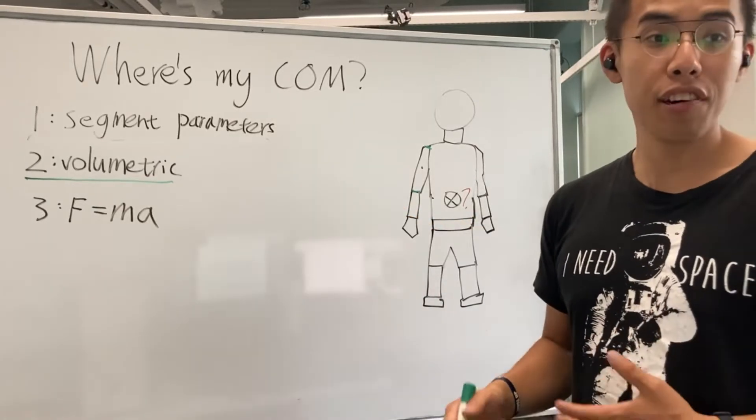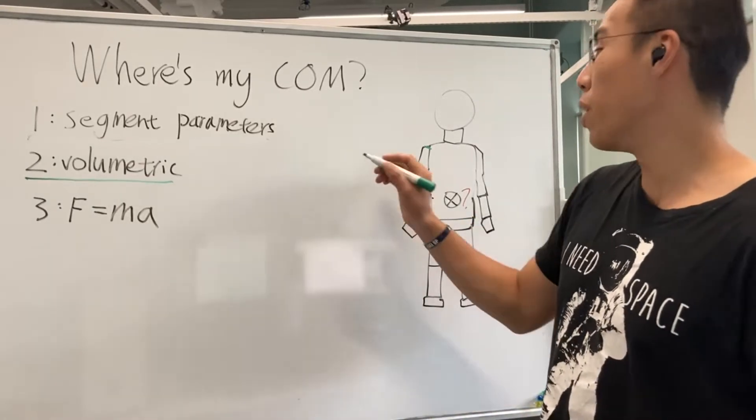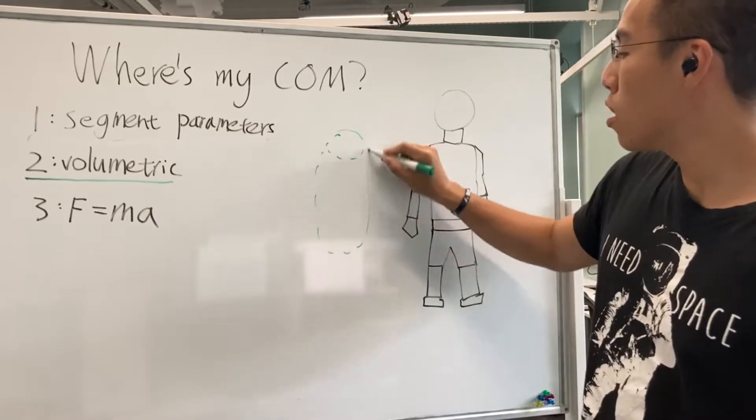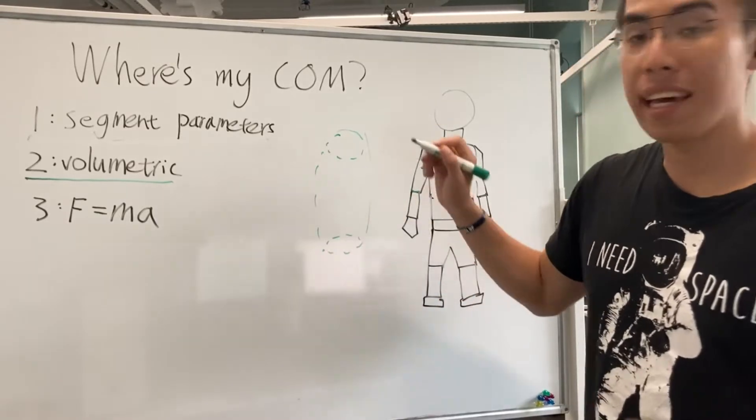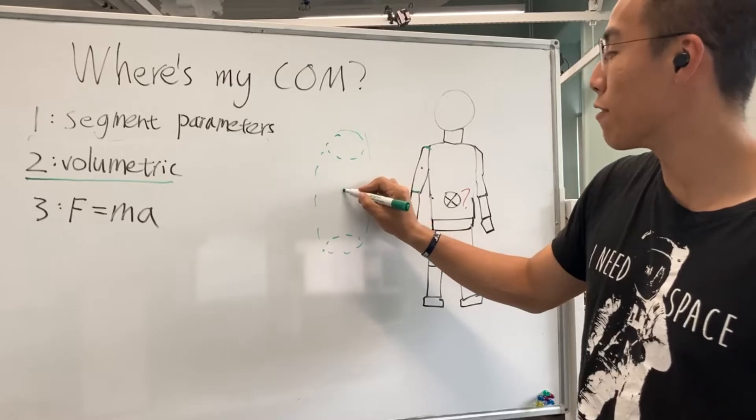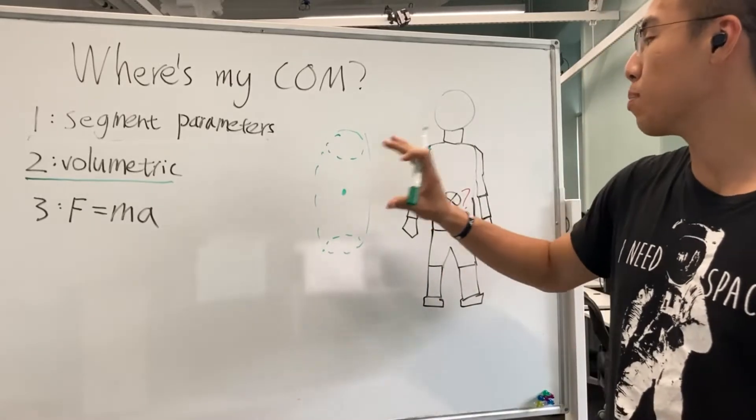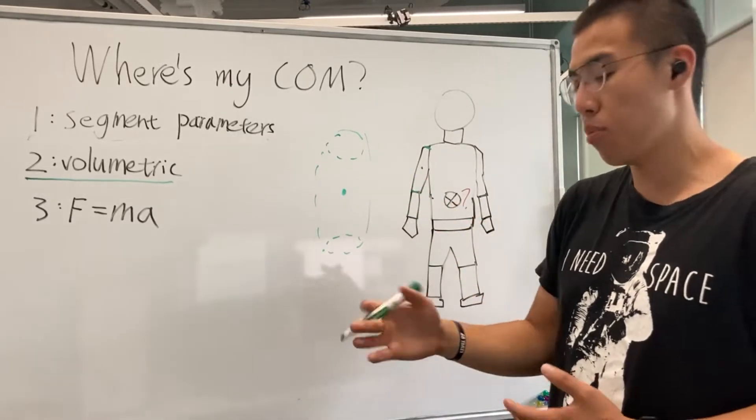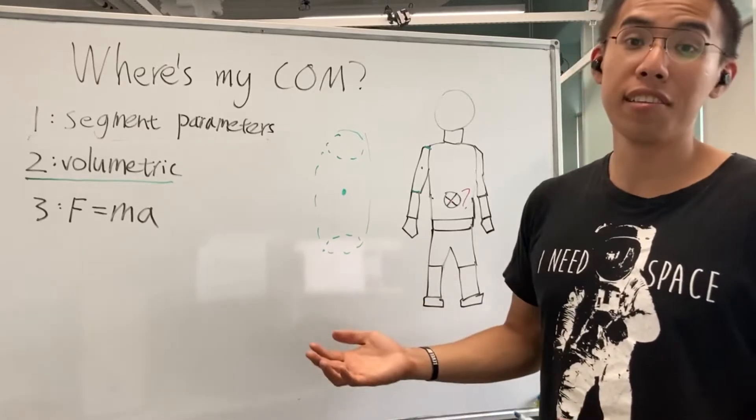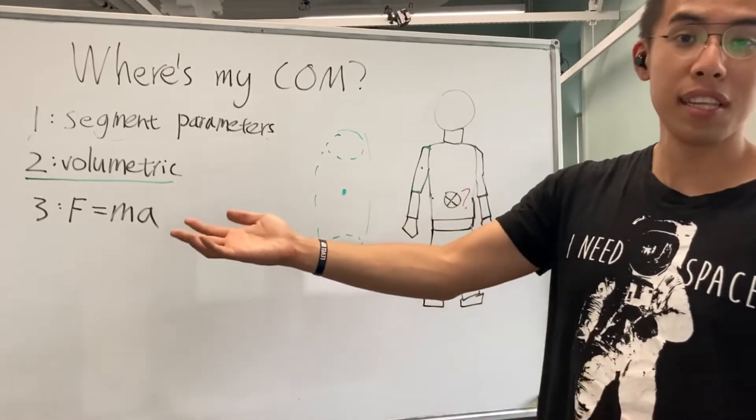The second method is a volumetric method which uses some way to get at the shape and the volume of each of the body segments, which then allows them to estimate where the center of mass is within that specific shape. So one popular shape to model the human body is a cylinder. But it's not really a cylinder, right?